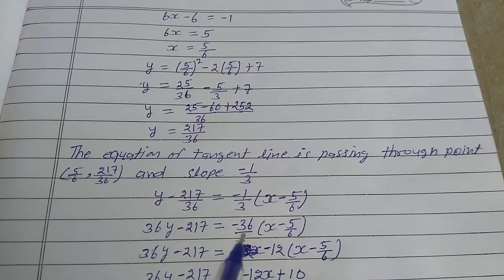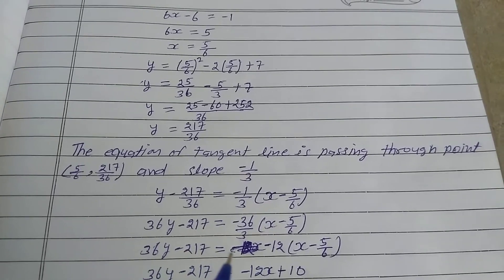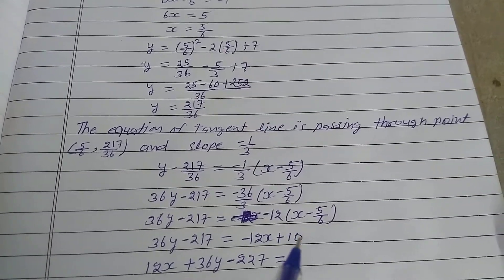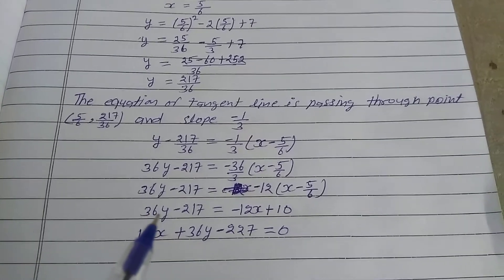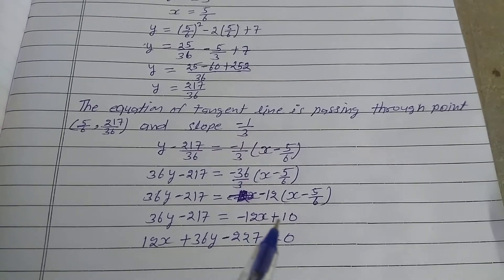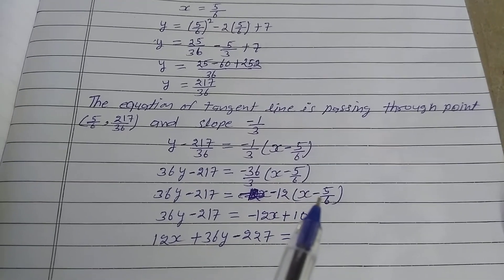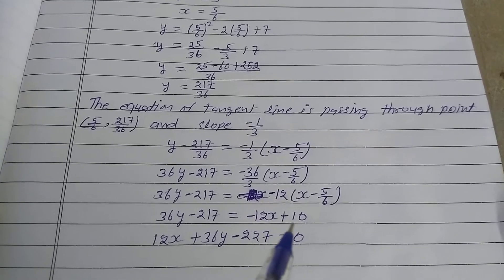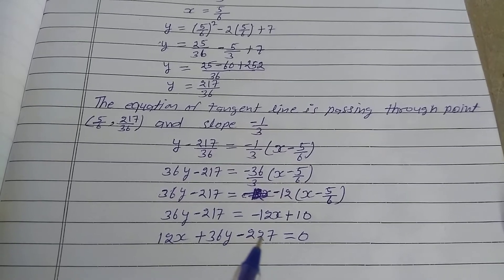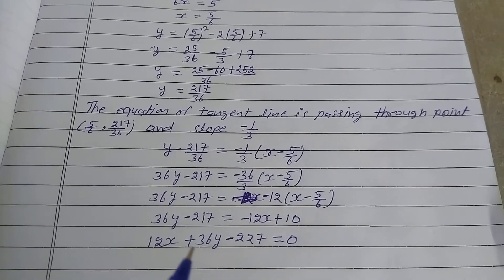Simplifying: 36/3 = 12, so 36y - 217 = -12(x - 5/6). Multiplying inside the bracket: 12 × 5/6 = 10, so 36y - 217 = -12x + 10. Rearranging: 12x + 36y - 227 = 0. This is the required tangent equation perpendicular to the given line.